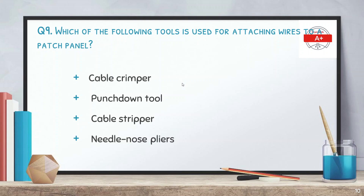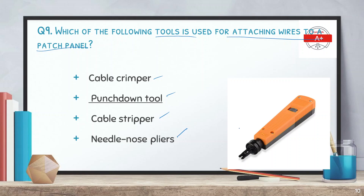Question 9: which of the following tools is used for attaching wires to a patch panel? Options are cable crimper, punch down tool, cable stripper, and needle nose pliers. The correct answer is punch down tool. You simply punch the cable at the back of the patch panel, and at the front there are ports where you can plug in an RJ45 connector.